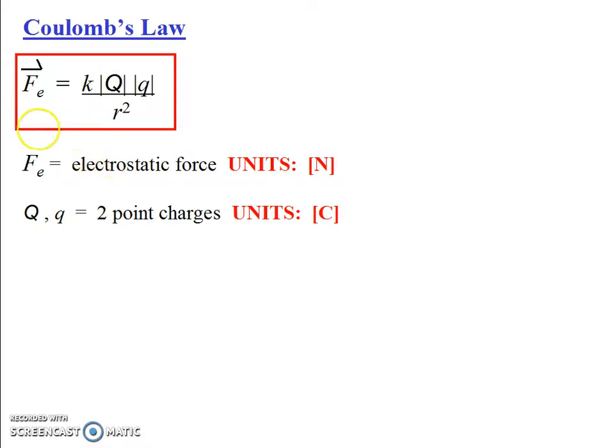So these are two point charges, two tiny objects that occupy a point in space. And we can only use Coulomb's law if they're point charges. Little r is the center-to-center distance of separation. And of course it's measured in meters, as all distances are.